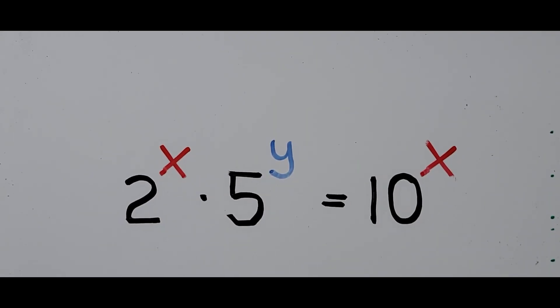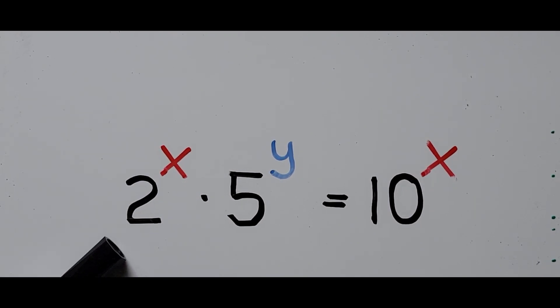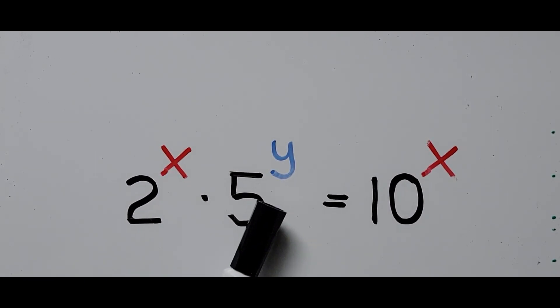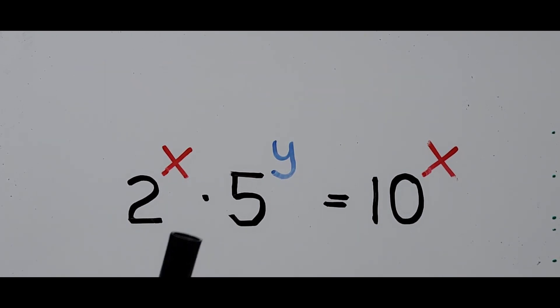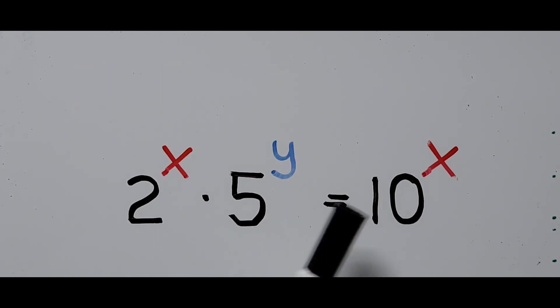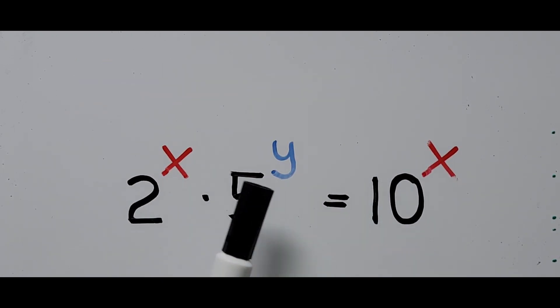Hello everyone, we have an exponential equation on the board: 2 to the power of x times 5 to the power of y equals 10 to the power of x. We're looking for the value of x and y.